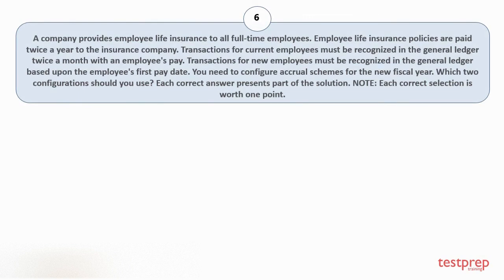Question number 6: a company provides employee life insurance to all full-time employees. Employee life insurance policies are paid twice a year to the insurance company. Transactions for current employees must be recognized in the general ledger twice a month with an employee's pay. Transactions for new employees must be recognized in the general ledger based upon the employee's first pay date. You need to configure accrual schemes for the new fiscal year. Which two configurations should you use? Each correct answer presents part of the solution. Each correct selection is worth one point.